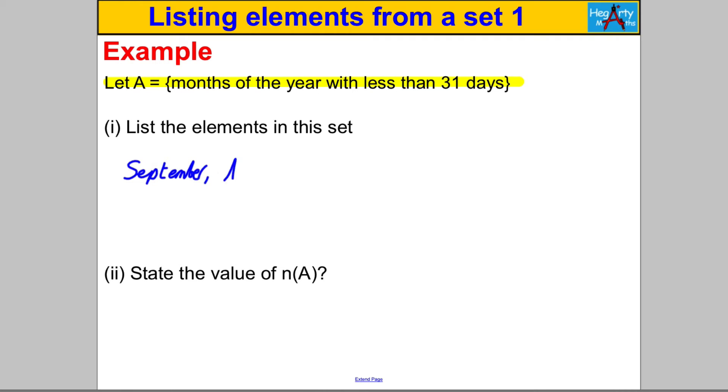It says for part one, list the elements. Well, you may remember the rhyme: 30 days has September, April, June and November. So they all certainly have less than 31. All the rest have 31 except February which has 28, but it has 29 in leap year. So February also always has less than 31 days in it. So they are the elements in the set A.